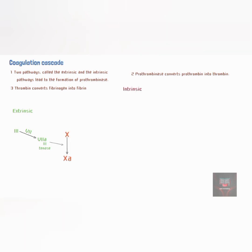The intrinsic pathway begins with the formation of the primary complex on collagen by high molecular weight kininogen, pre-kallikrein, and Factor XII. Factor XII becomes activated. Activated Factor XII then activates Factor XI, which activates Factor IX. Activated Factor IX, with its co-factor activated Factor VIII, forms the tenase complex, which activates Factor X.